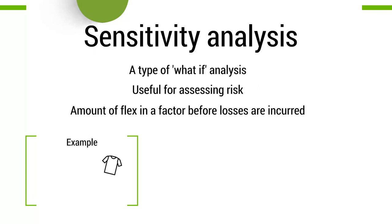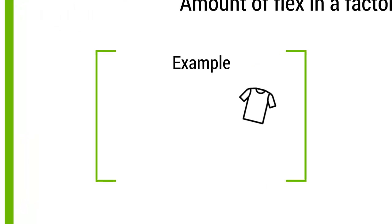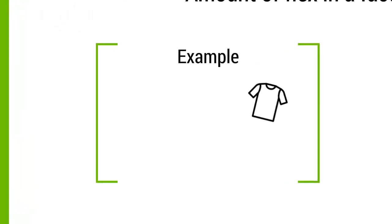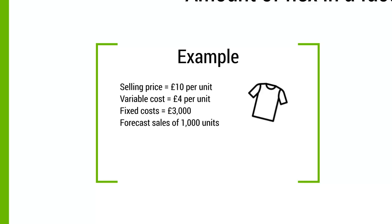We're going to look at a project where we're going to be selling t-shirts. We have a selling price of £10 per unit, and each unit we sell will incur a variable cost of £4 — this covers direct material, direct labour, etc., that goes into producing each individual unit. If we don't sell any t-shirts we'll have zero variable costs. We then have our fixed costs — costs incurred regardless of production volume, such as rent on a factory.